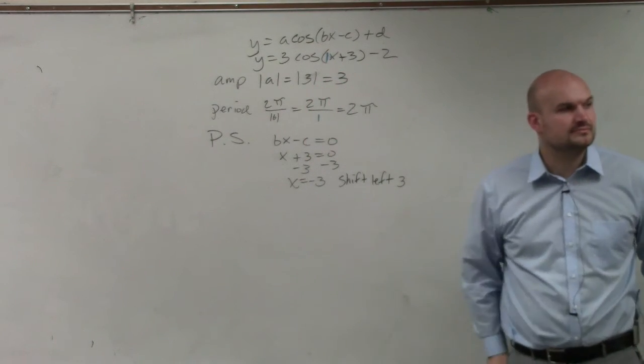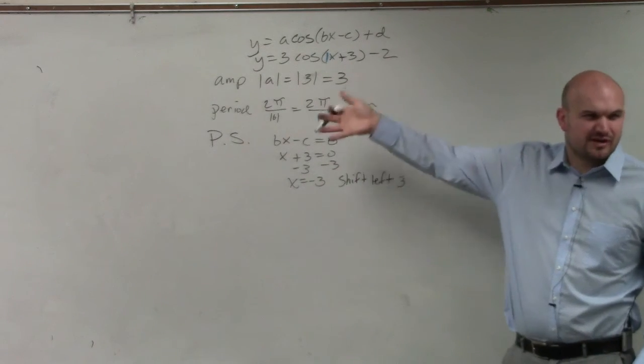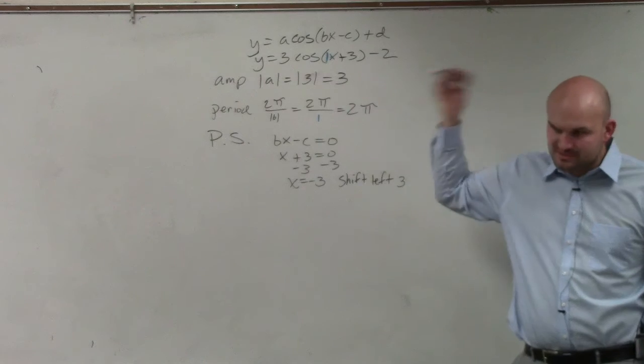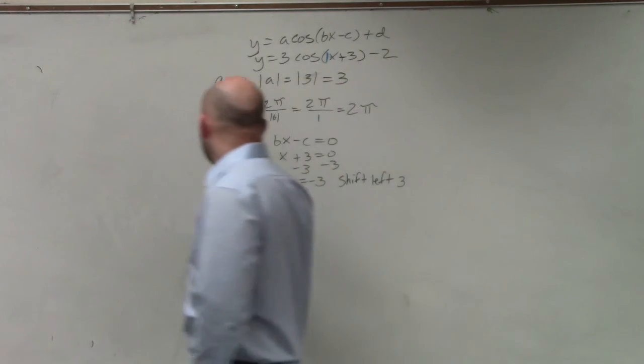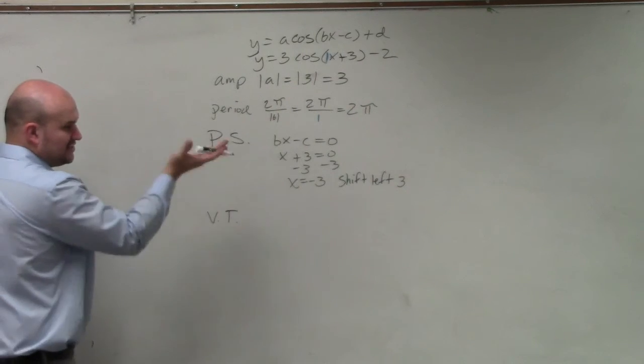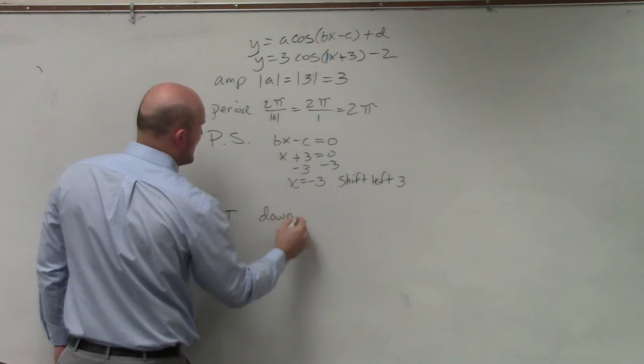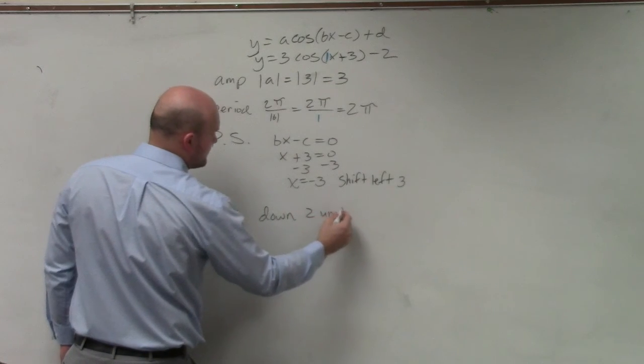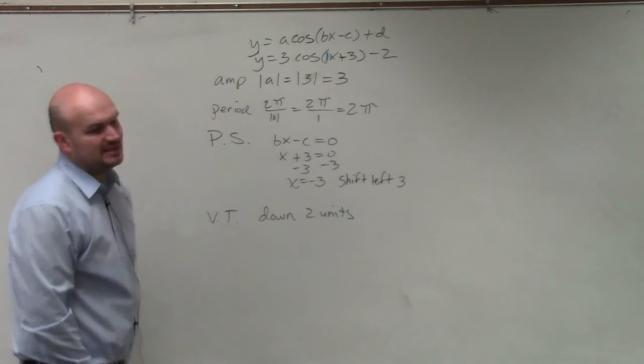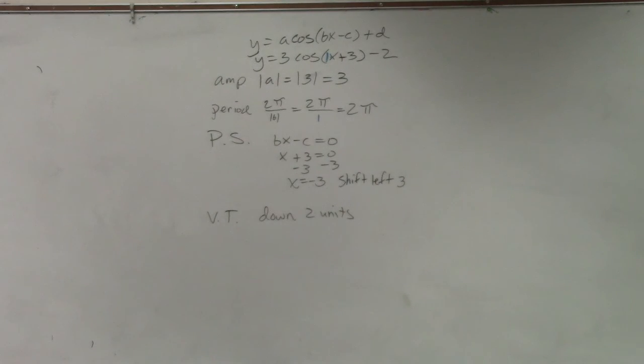That's the phase shift, because that's negative. And you guys already know that, plus 3. If you remember that from parabolas, plus 3 shifts it to the left. And then last but not least is your vertical translation. That is going to be shifting up or down. That's going to be your d, which you could say is down 2 units. OK, exact same thing, guys, we've been doing in chapter 1, if you remember all that stuff.